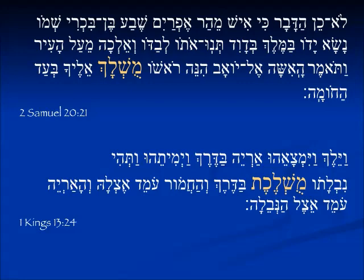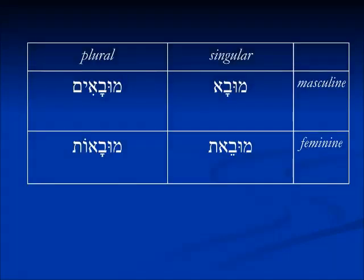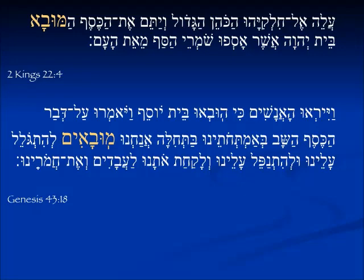If we have a hollow verb — we've done bo in some other binyan — we see that the 'u' sound still comes with the mem. And as in other hollow participle verbs, we do not see the vav at all. Muvah, muvet — since it ends in aleph, we get a tzere and then a tav — muvahim and muvahot. These are recognizable forms. Talking about the money which is brought to the house of Yehovah: 'et hakeseph hamuvah' — the money is not doing anything, the money is being brought into the house of the Lord.